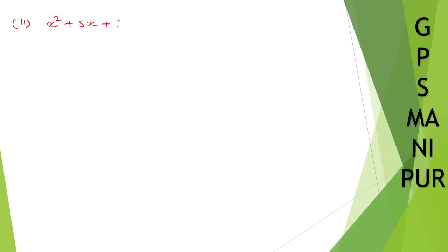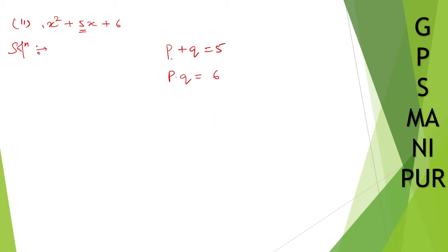Roman number two: x squared plus 5x plus 6. Solution. Same method — find two numbers p and q such that p plus q equals 5 (the middle term) and p into q equals 6 (the constant). Two numbers that add to 5 and multiply to 6 are 3 and 2: 3 times 2 is 6, and 3 plus 2 is 5. So we rewrite: x squared plus 3x plus 2x plus 6.